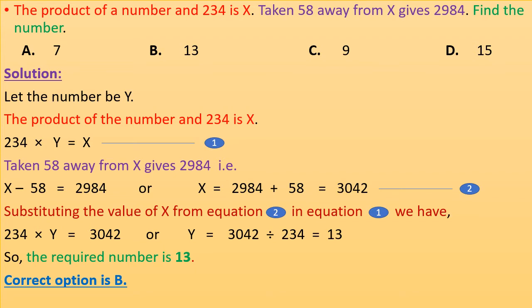Now taking 58 away from X gives 2,984. That is X - 58 = 2,984, or X = 2,984 + 58 = 3,042. This is equation 2.